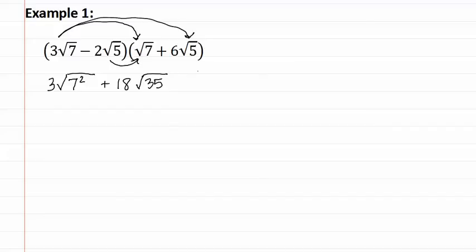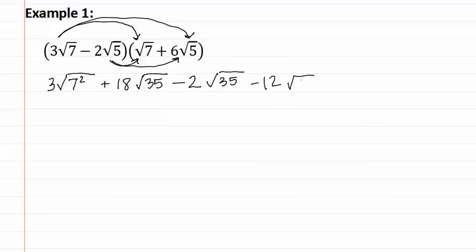Next, we do the inners, and we have negative two times one, which gives us negative two. Once again, we have square root of five times square root of seven, which will give us the square root of thirty-five. Now we do the last, where we have negative two times six is negative twelve, and square root of five times square root of five is the square root of five squared.